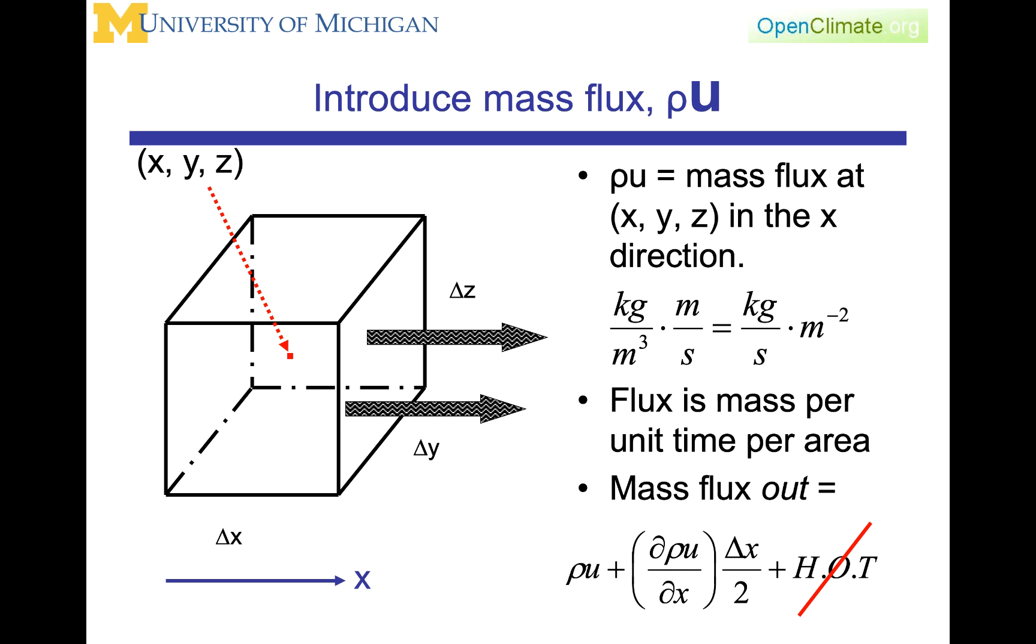Rho u is mass flux at that point in the center, which is marked x, y, z. And u is the velocity in the x direction, so this is the mass flux in the x direction. Its units are kilograms per second times one over meters squared. You see that coming from kilograms per meter cubed, which is density, times the velocity, which is meters per second. What that tells you is that flux is mass per unit area per unit time.